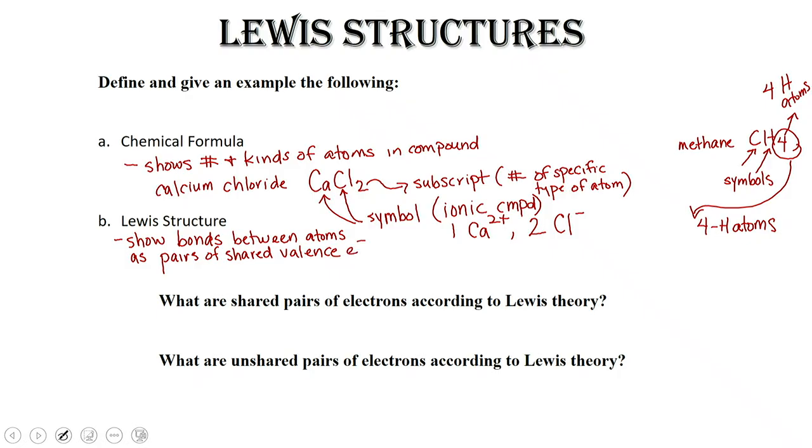We have a single line for one pair, two lines for two pairs, and three lines for three pairs. Those lines represent the bonds between individual atoms. Any unshared electrons are shown surrounding the atoms as dots. One dot for one electron, two dots for two electrons.